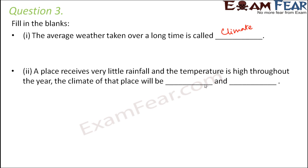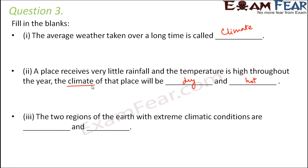A place receives very little rainfall and the temperature is high throughout the year — the climate of that place will be dry and hot. With little rainfall there is not much water, so the place is going to be dry. And when the temperature is very high, the place is quite hot. Now, when we say the climate is dry and hot, that doesn't mean every single day will be hot and dry — it might rain sometimes. But when you take an average over a long period of time, you find that most of the time it doesn't rain much, so overall there is very little rainfall.